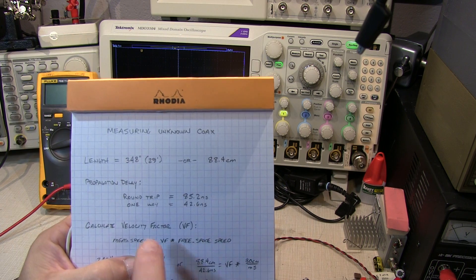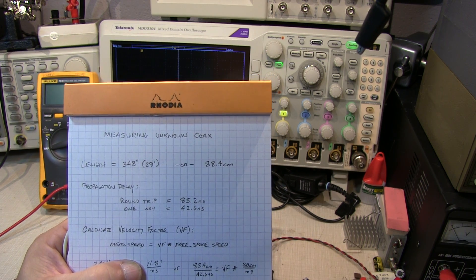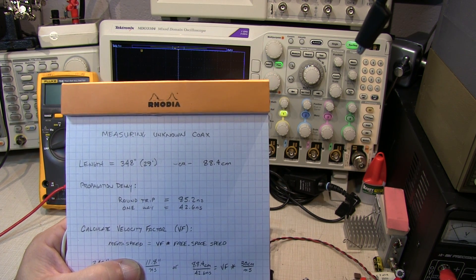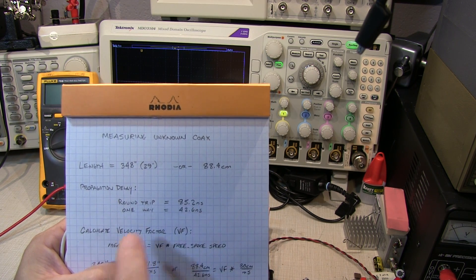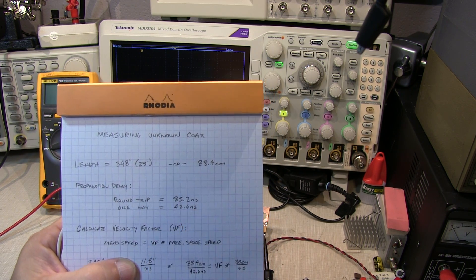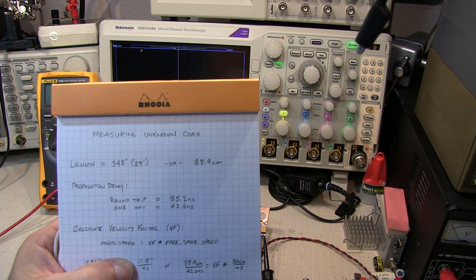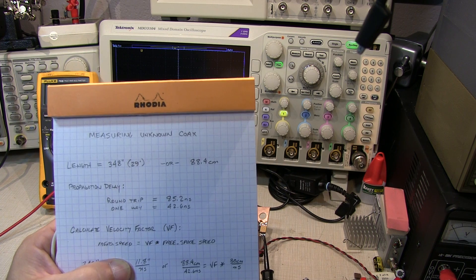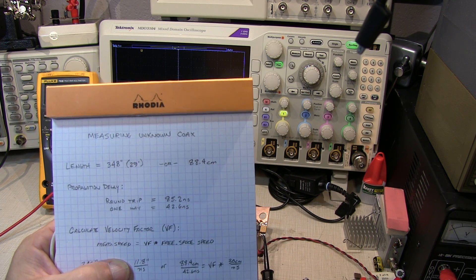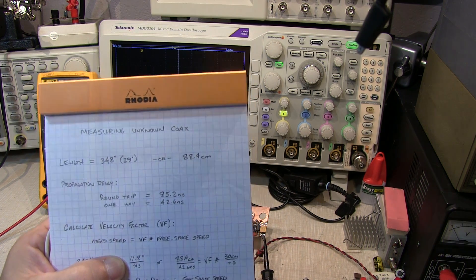In order to calculate the velocity factor of the cable, we need to measure how long it takes a signal to go down the cable, or the propagation delay of the cable. So I will use a method that I used in a previous video by sending a fast pulse down the cable and measuring how long it takes the reflection from the open end to come back.